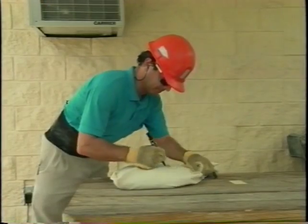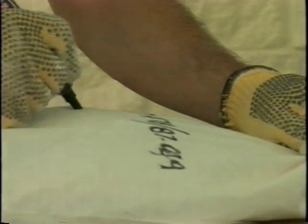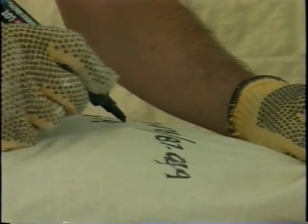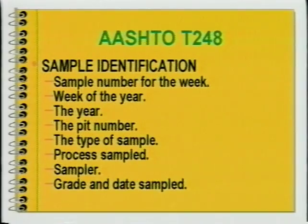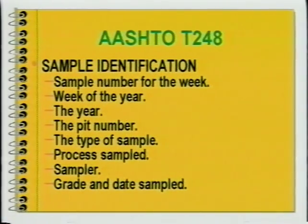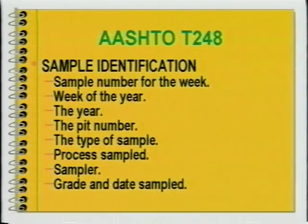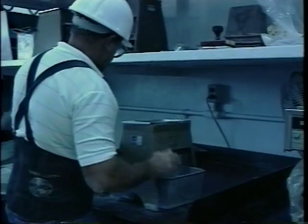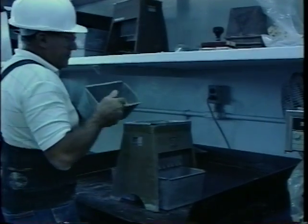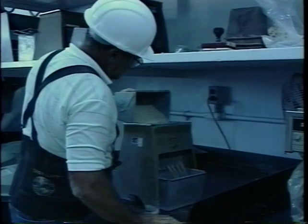It is important that each sample be fully identified from sampling through testing. Required sample identification may include the sample number for the week, the week of the year, the year, the PIP number or facility that was sampled, the type of the sample such as stockpile or belt sample, process sampled, sampler, grade of material, and date sampled.